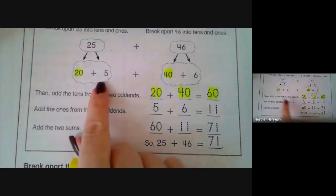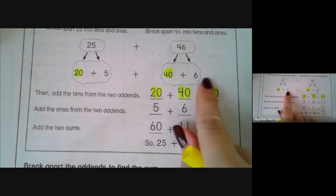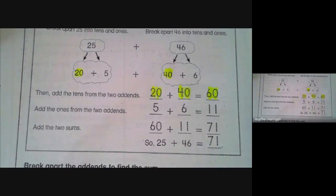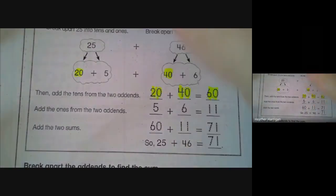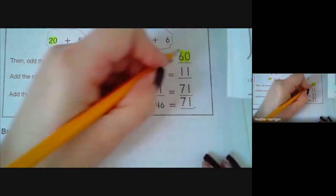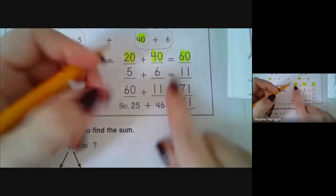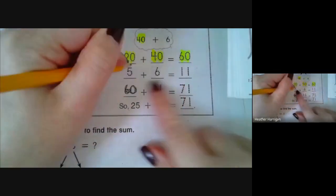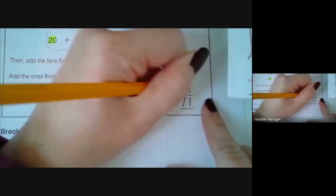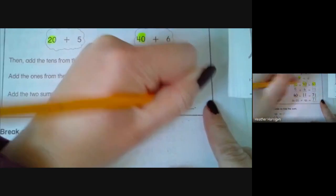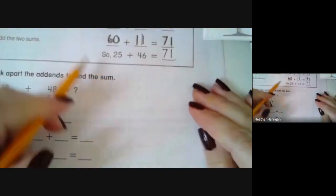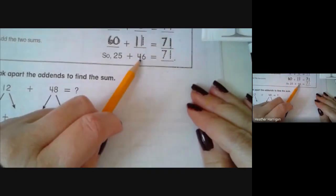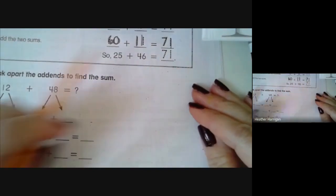Then we would go to our ones. We have five ones and six ones, and we would say 5 plus 6 equals 11. Then we would write a new addition sentence, which would be 60 plus 11, and 60 plus 11 is 71. So 25 plus 46 gives us the sum of 71.